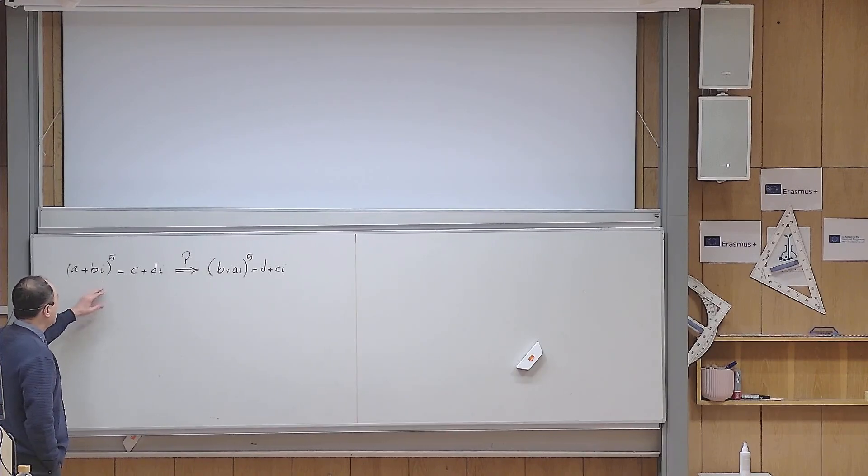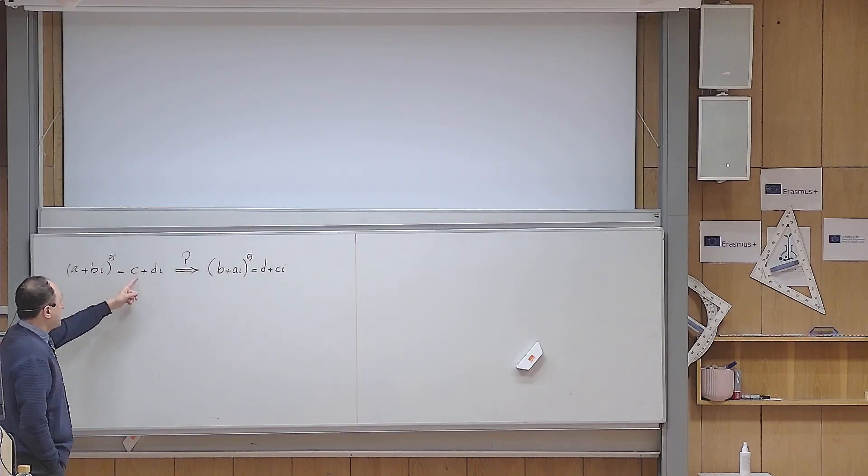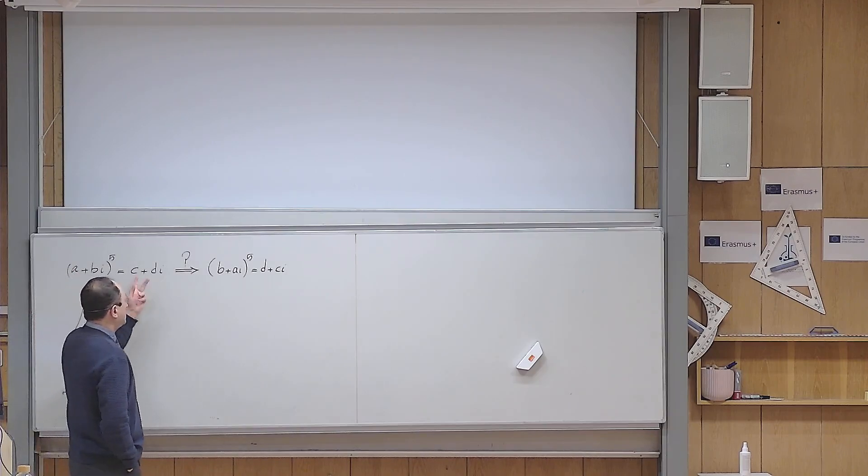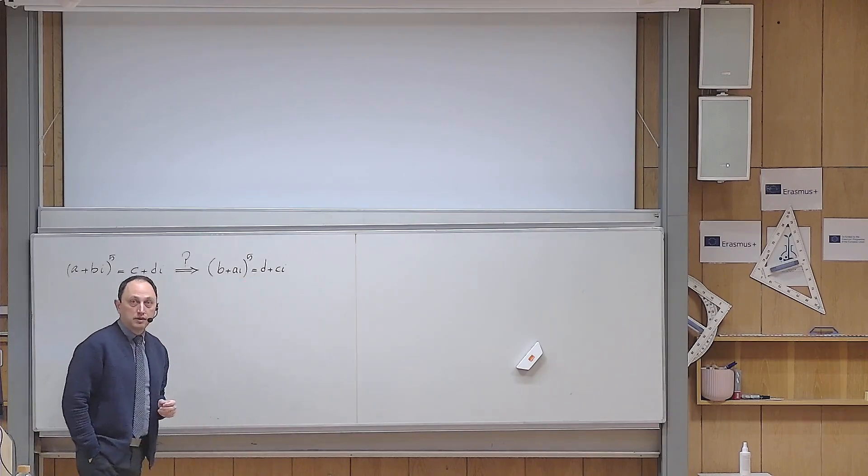The problem is interesting. It tells you that apparently it's a little bit counterintuitive, because this tells you that if this is granted, then you can flip a and b and c and d, and the equality still holds.